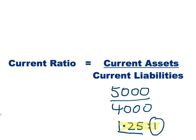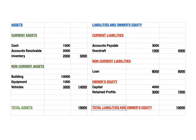At first glance, people would say that's a good position because they have more assets than what is needed to pay back the business's liabilities. But if we go back here, we can see that not all of a business's current assets are cash — in this example they only have $1,000 in cash compared to $4,000 in current liabilities. So 1.25 isn't really a good measure of liquidity; this business is not very liquid.